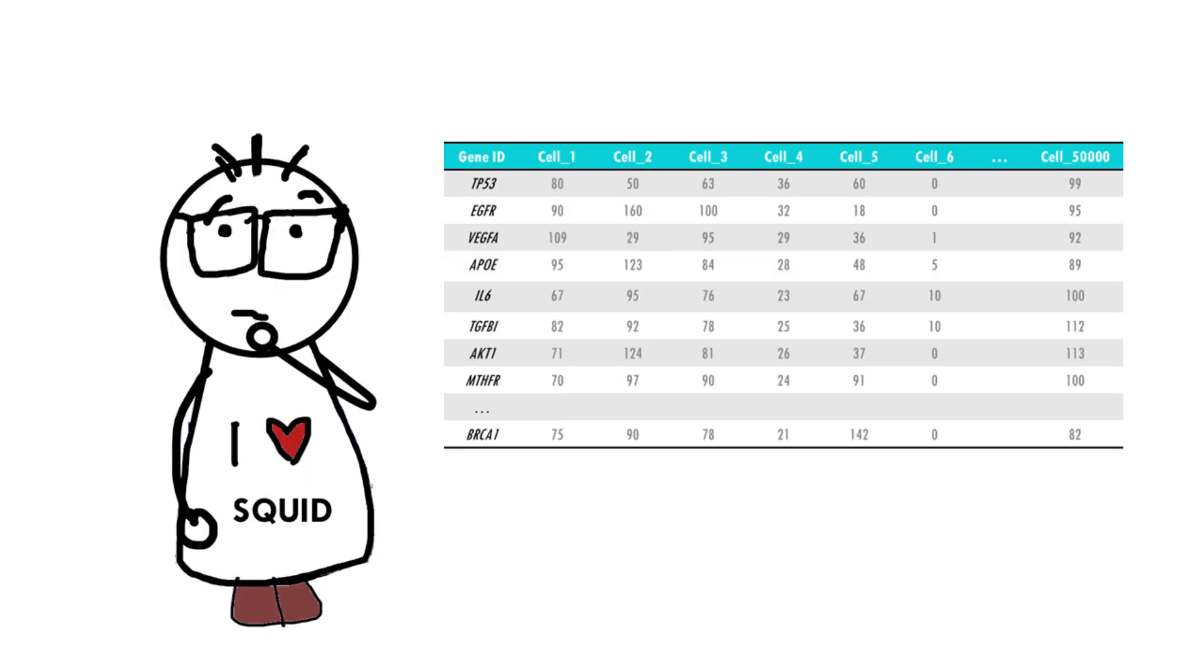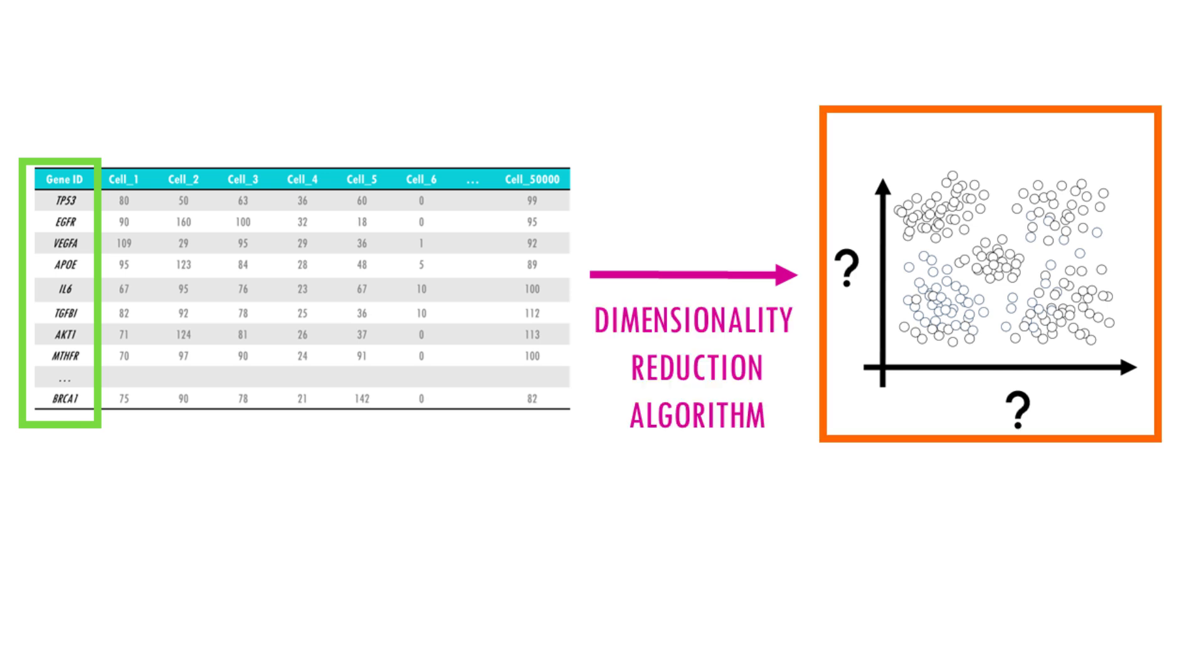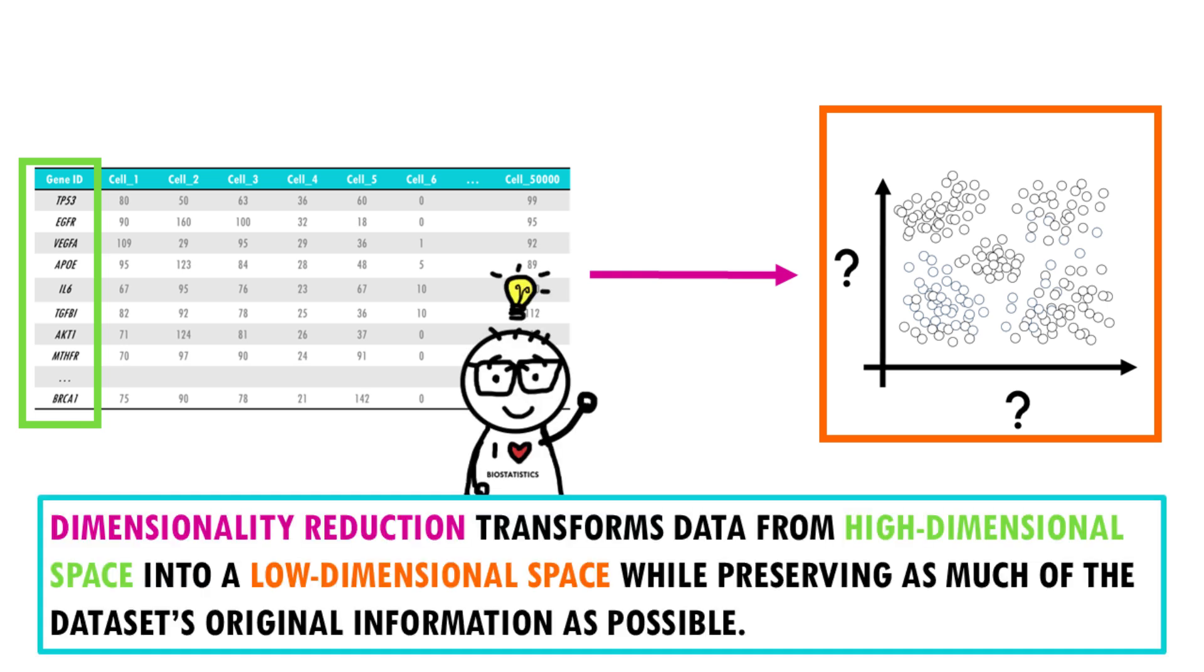Now to do that, we introduced the concept of dimensionality reduction, by which we convert a multidimensional data set with many thousands of genes into two variables we can plot. Obviously, when we reduce the number of dimensions, we're going to lose information. But the idea is to preserve as much of the data set structure and characteristics as possible.